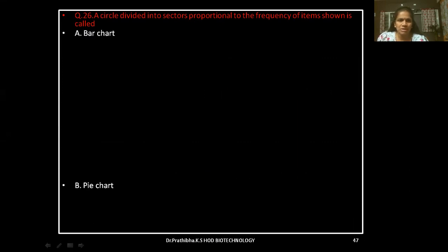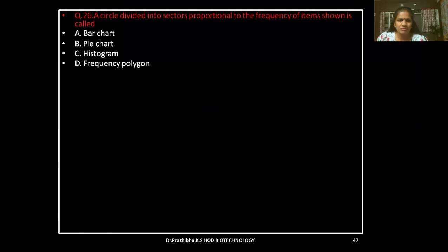Question 26: A circle divided into sectors proportional to the frequency of items shown is called — bar chart, pie chart, histogram, or frequency polygon.